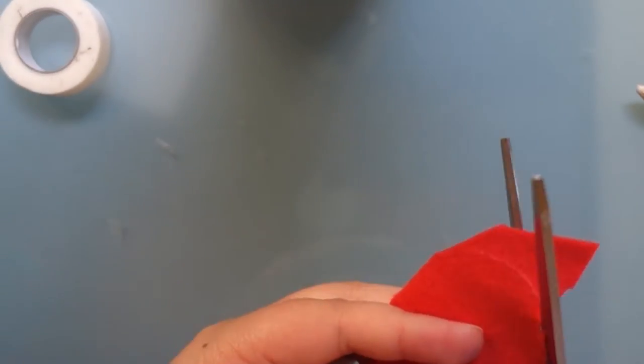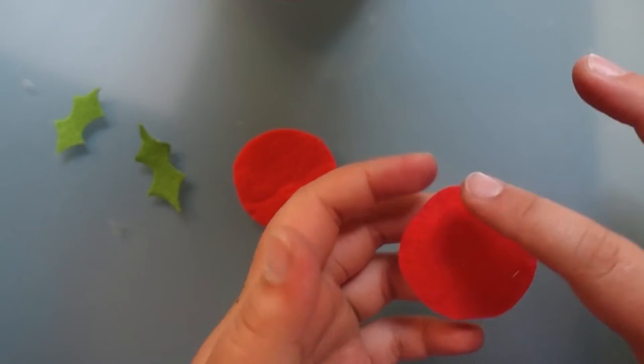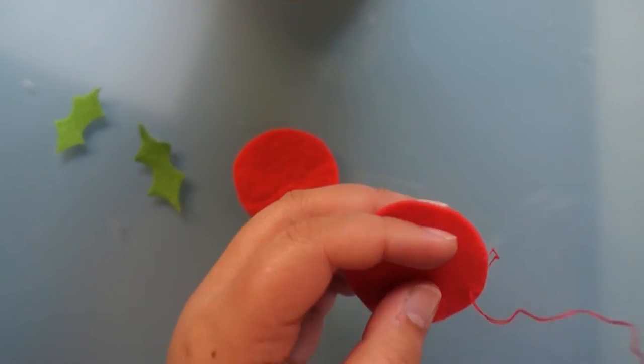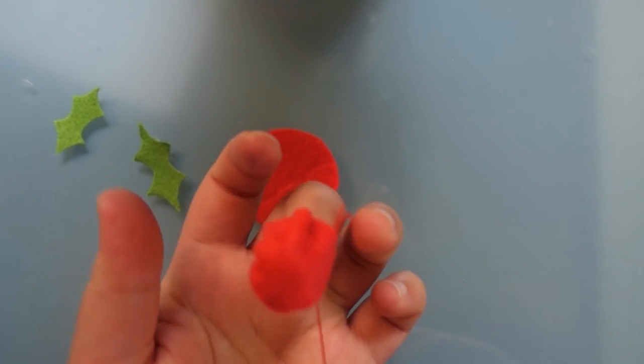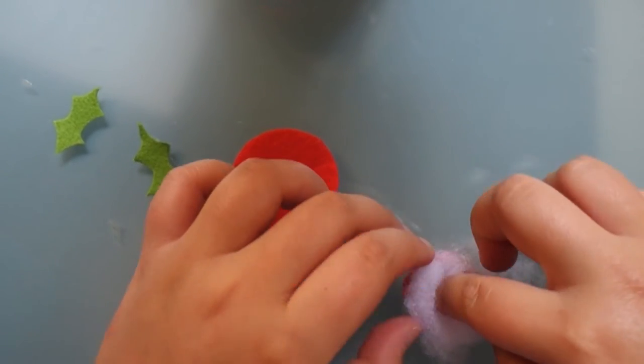To make these berries we're just going to use the same technique that we did to make the pudding. So we're going to do a running stitch around the edge and then gather our stitches and stuff it with the tiniest bit of toy fluff.